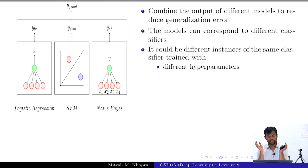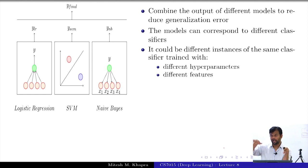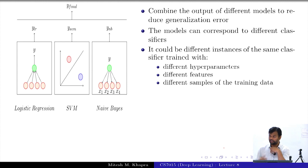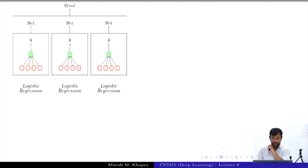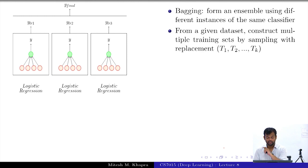The hyperparameters could be learning rate, batch size, or the number of neurons in each layer. So it could be the same classifier but with different hyperparameters, different features. Instead of using all hundred features, you could train classifiers with different subsets of features, or different samples of the training data. Bagging is one such ensemble method, where you have different instances of the same classifier trained on different samples of the training data.